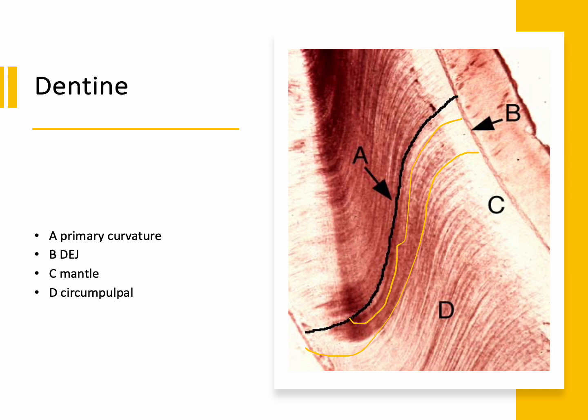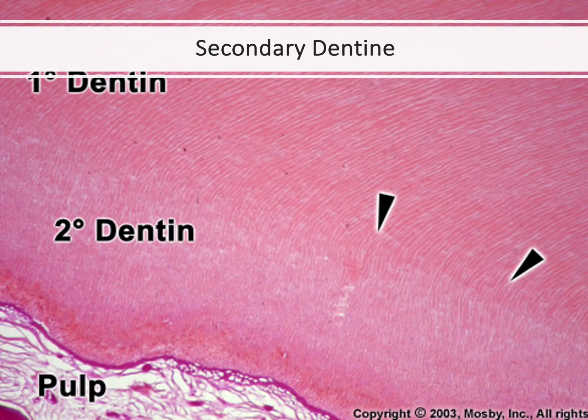Here you can see the primary dentine and the secondary dentine, and there is a difference or change in the tubule direction creating a line called contour line of Owen. So the contour line of Owen is a line caused by a change in the curvature of the tubules — whether between primary and secondary dentine, or within the secondary curvatures inside the primary curvature.